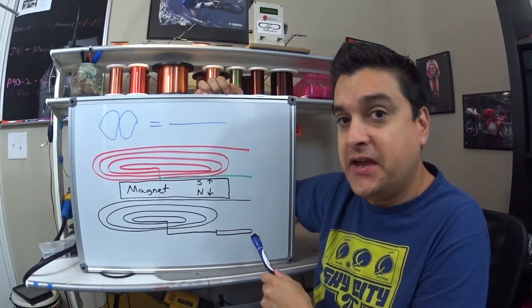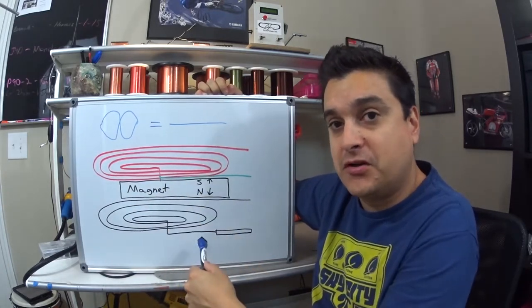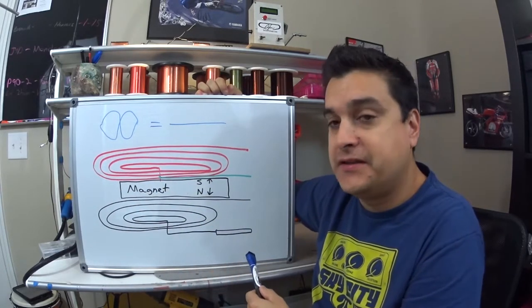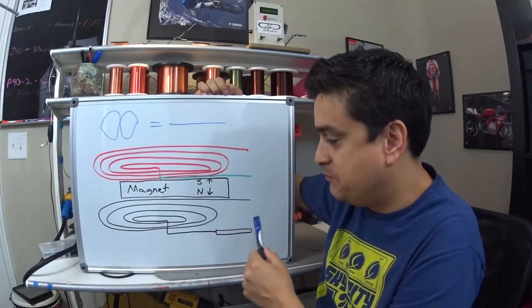Basically what we're doing is we're taking two coils that could hum when they're alone and we are running them electrically out of phase with each other. Let's discuss briefly how that works.